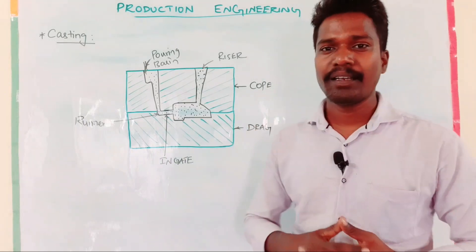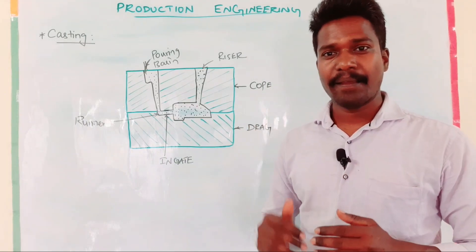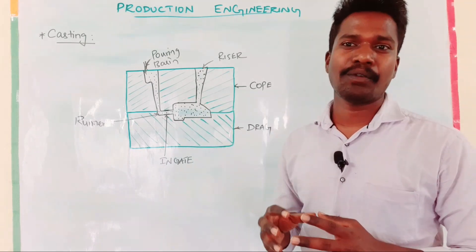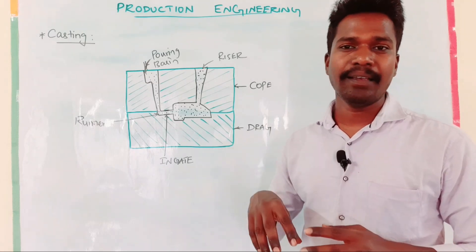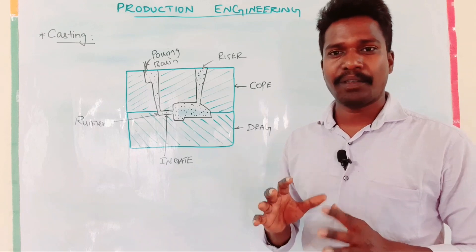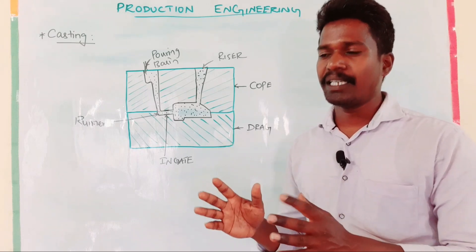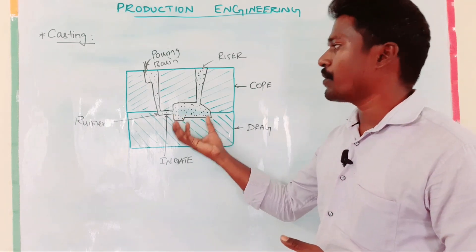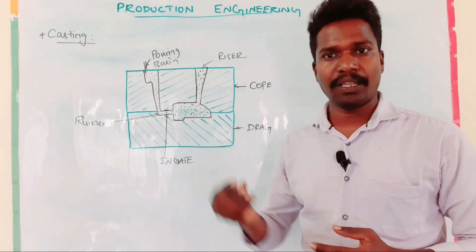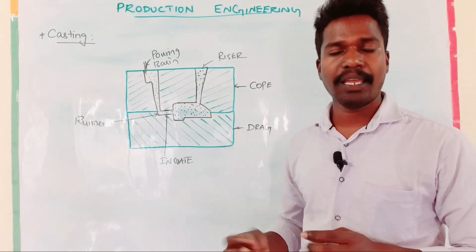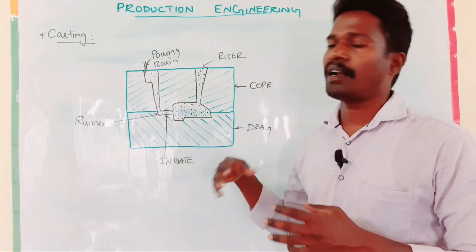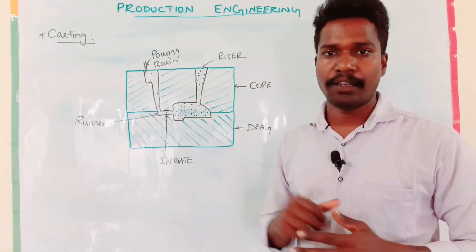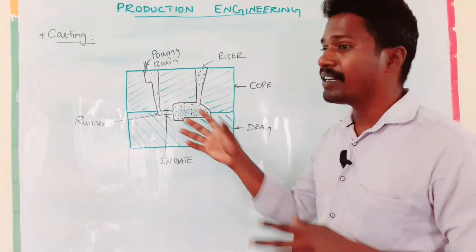Production Engineering is a very important topic. Casting is a very important topic. First, metal is melted. So, this is a solid to convert — solid to convert into a product. The final product is casting. We will talk about casting.